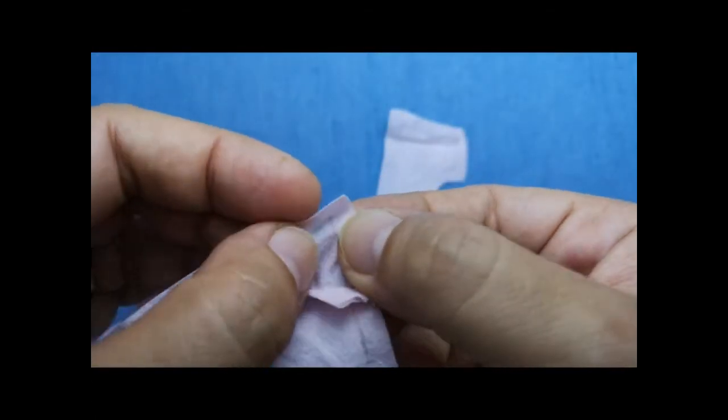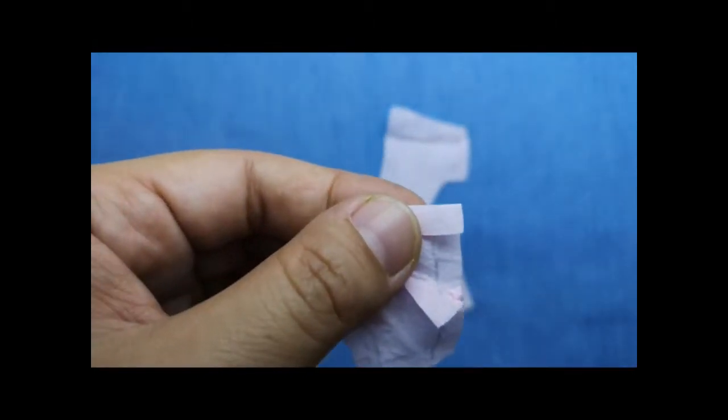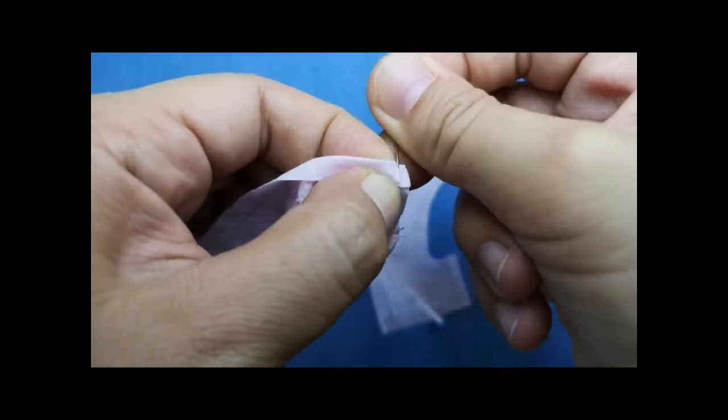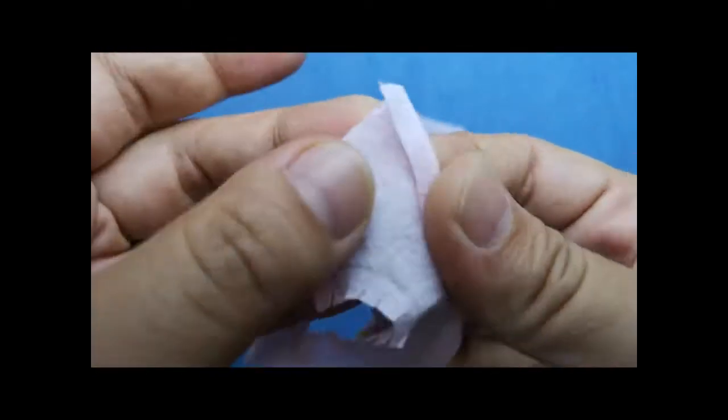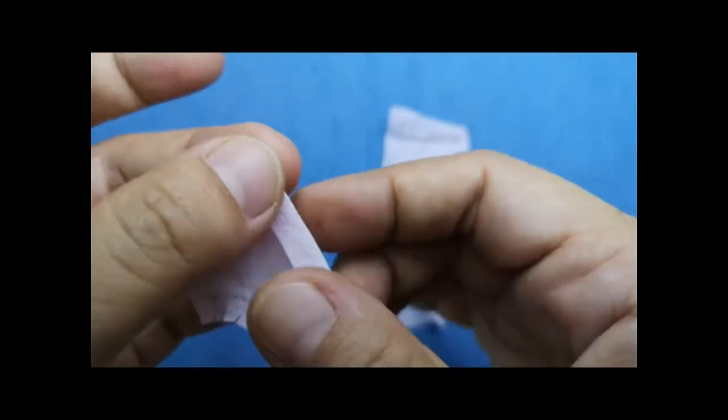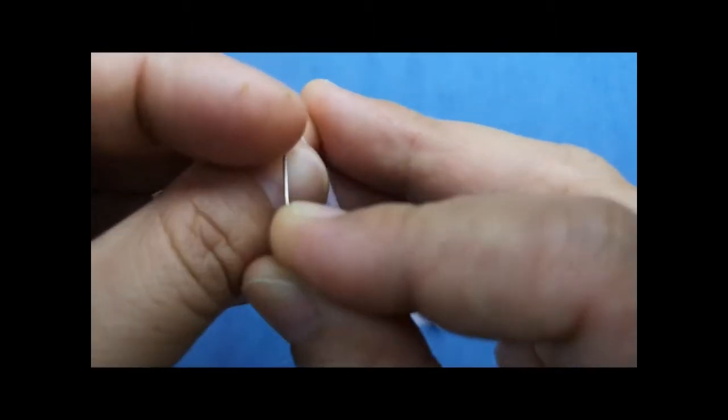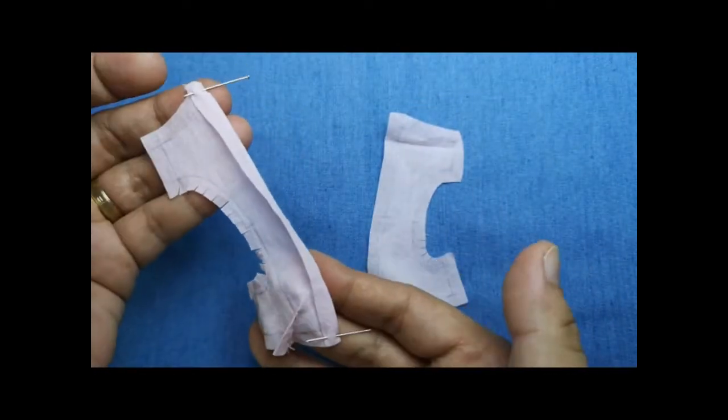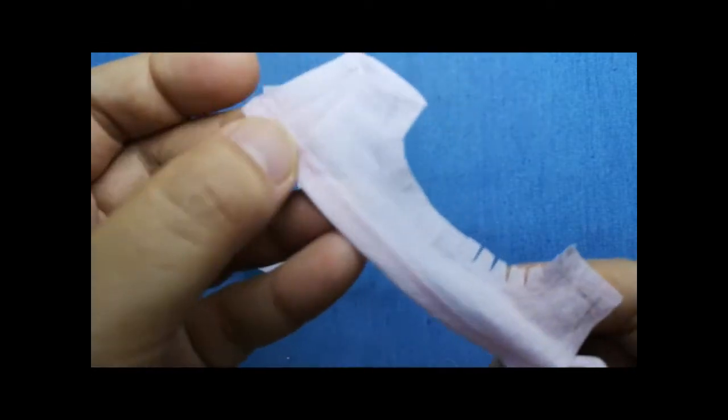Up next is we hem the deep V-neckline. Let's pin the fold securely first before running it on the sewing machine. And here we go.